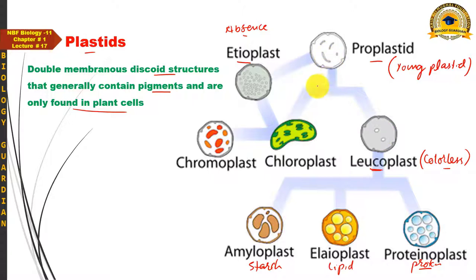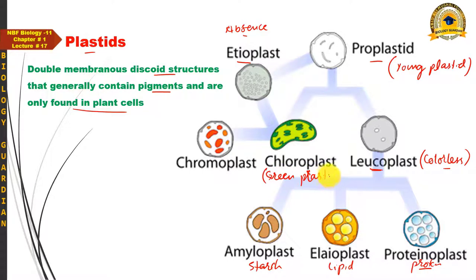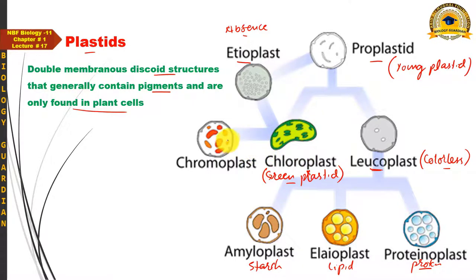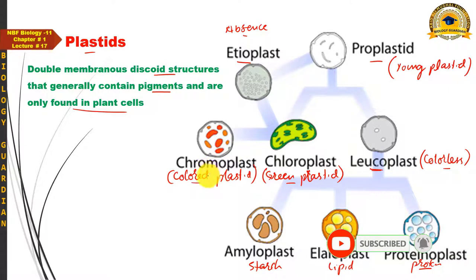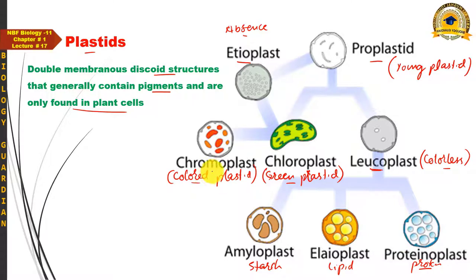A proplastid can also convert into a chloroplast, the green plastid concerned with photosynthesis and food manufacturing, which we will discuss in detail. Under certain conditions, chloroplast can convert into chromoplast — the colored plastid (other than green) found in flowers and fruits. Chromoplast imparts attractive colors to plant parts, attracting insects and thereby helping in pollination.